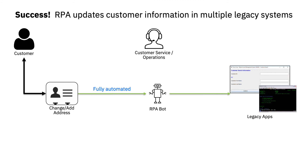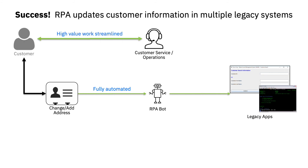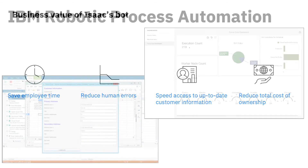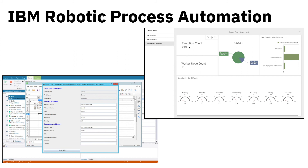In summary, Isaac built, ran, and monitored a bot to automate the input of customer information into legacy systems, leaving more time for high-value customer interactions. Isaac's bot saves employee time, reduces human error, speeds access to up-to-date customer information, and reduces total cost of ownership. IBM RPA is part of an AI-driven automation platform, enabling you to seamlessly integrate RPA with other automation capabilities, AI, and machine learning.